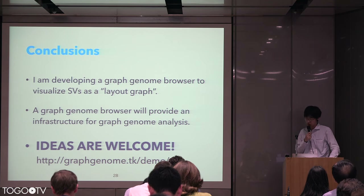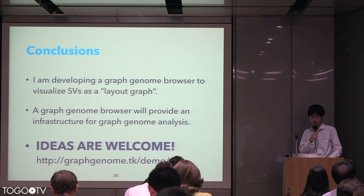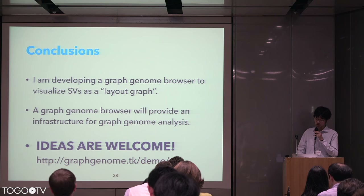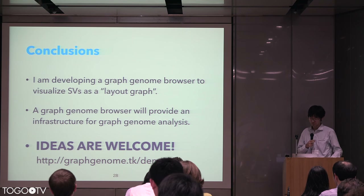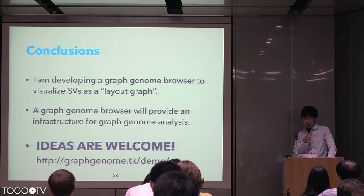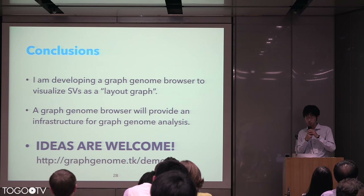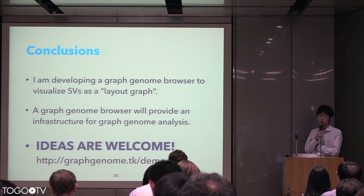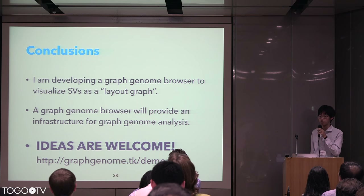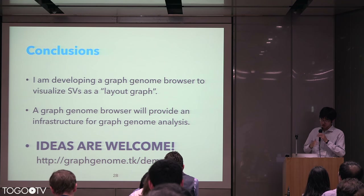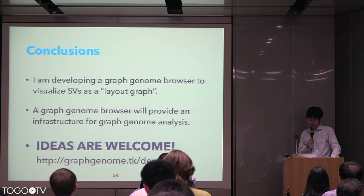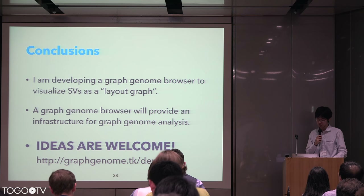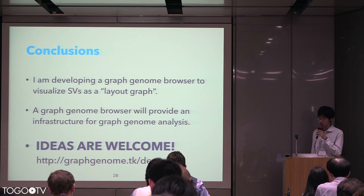The summary is as follows. Structural variation can be represented on genome graphs using a layered graph. So, I am developing a genome graph browser to visualize structural variation as a layered graph. A graph genome browser, including my implementation, is an infrastructure for graph genome analysis. And I believe most of you will become users in the near future. There are many unknowns and difficulties, so I would appreciate it if you could share more ideas and suggestions for the graph genome browser. And I hope you become a user.